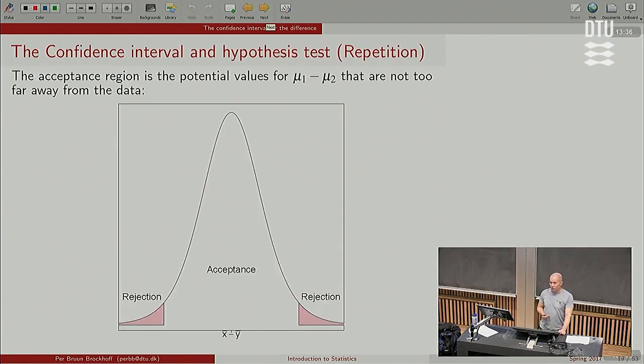Just to remind us, it's the x bar minus the y bar, two averages. We have the acceptance region and we have the rejection areas. The confidence intervals are those values that we accept by the hypothesis test. The ones that are outside the confidence interval are the ones we would reject. So the confidence interval consists of the acceptable, or in everyday language, plausible values for the difference of the two means.